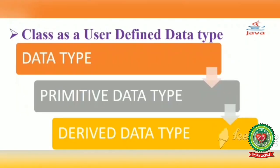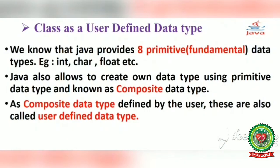In the data type category we have two basic types: primitive data type and composite data type. In primitive data type — which we also discussed in 8th standard — Java provides eight primitive fundamental data types, for example int, char, float, etc. These are built-in data types in Java, and in this type we can take only a single value at a time.